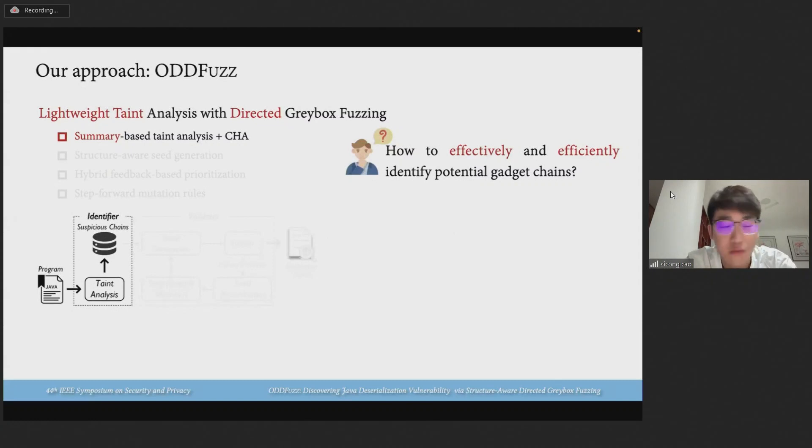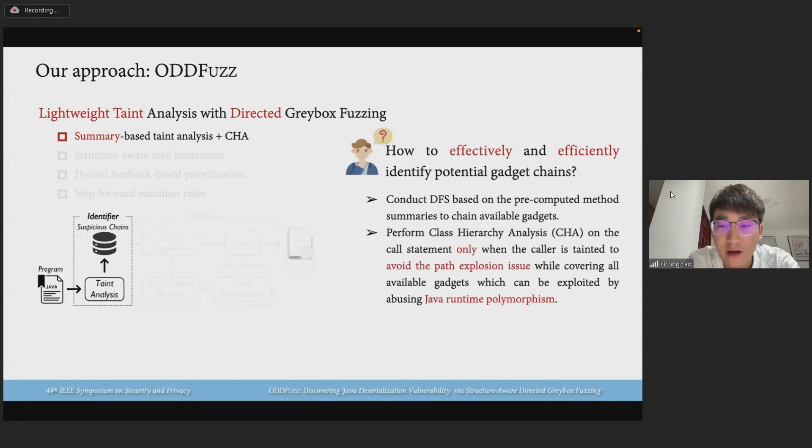First, due to Java runtime polymorphism, existing call graph-based analyses may suffer from precision problems. Blindly considering all candidates' overriding methods will lead to path explosion issues. To effectively and efficiently identify candidate gadget chains, we perform lightweight summary-based taint analysis, which first conducts depth-first search based on pre-computed method summaries to chain available gadgets. Then we perform class hierarchy analysis CHA on the call statement only when the caller is tainted, to avoid the path explosion issue while covering all available gadgets which can be exploited by abusing Java runtime polymorphism.